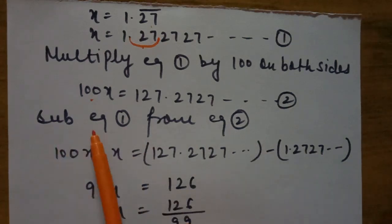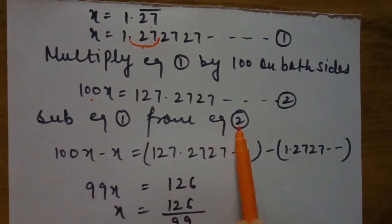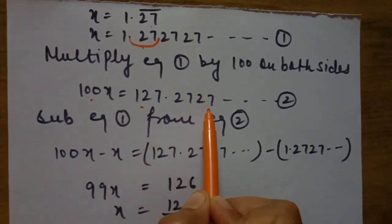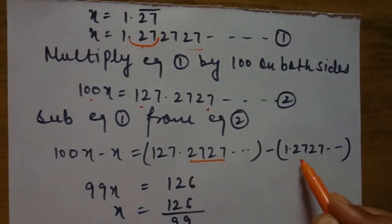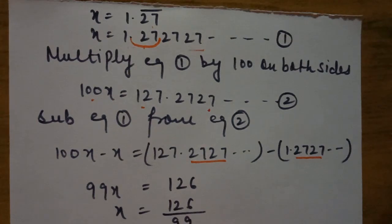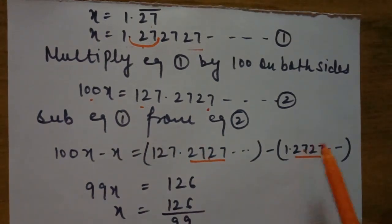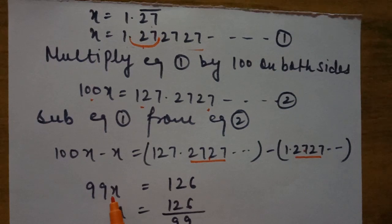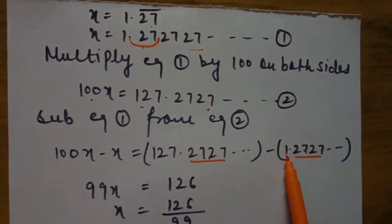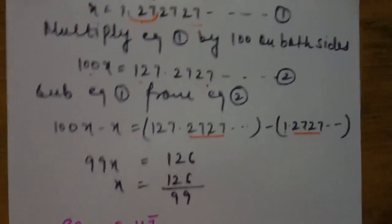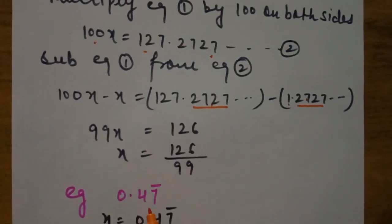This is equation two. Subtract equation one from equation two: 100x − x = 127.2727... − 1.2727... The infinite repeating digits after the decimal cancel each other. So 99x = 127 − 1 = 126, giving x = 126/99.